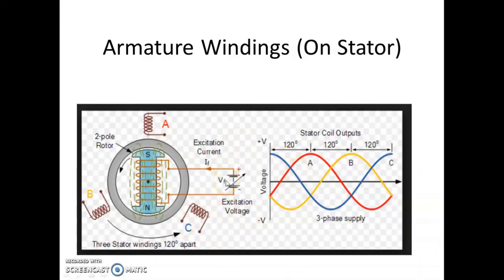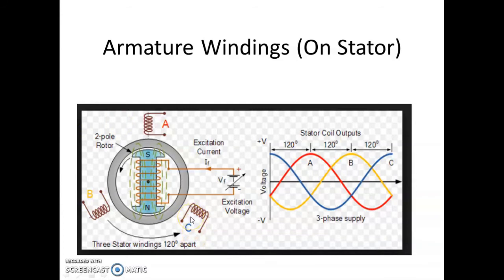This figure gives us an approximate idea of how the alternator and its windings are. If you concentrate on the stator portion, A, B and C are the three-phase windings. For understanding purposes, winding A is at 0 degrees, winding B is 120 degrees apart, and winding C is again 120 degrees apart. Normally these windings are of distributed type, distributed along the periphery of the stator.